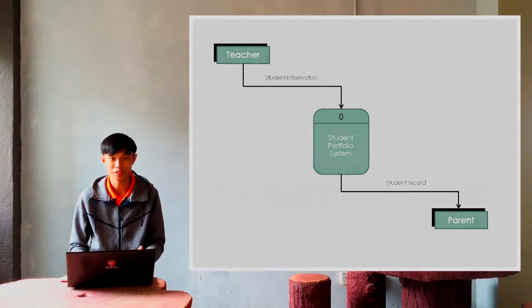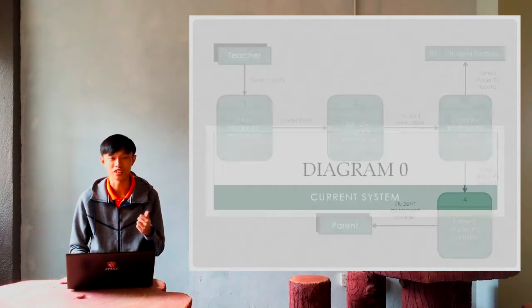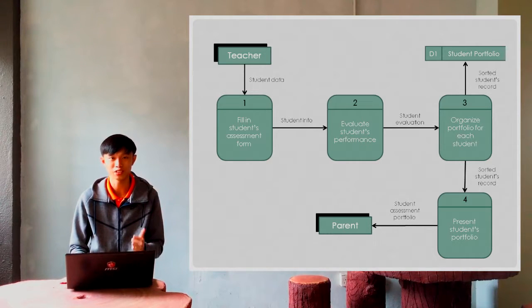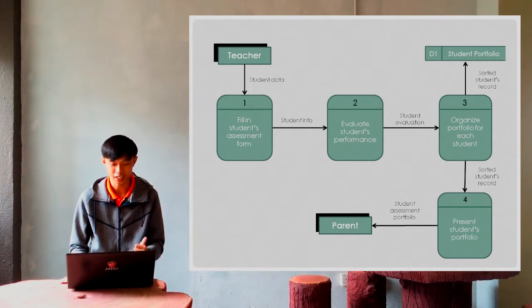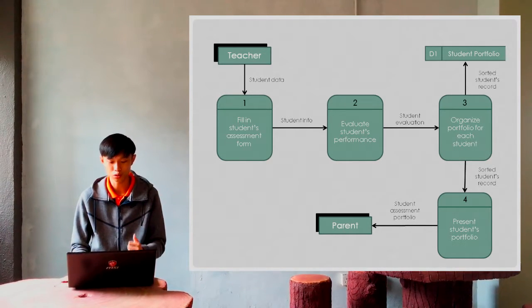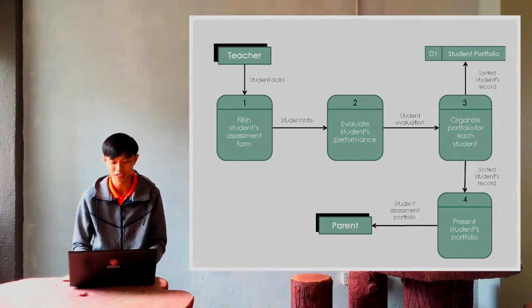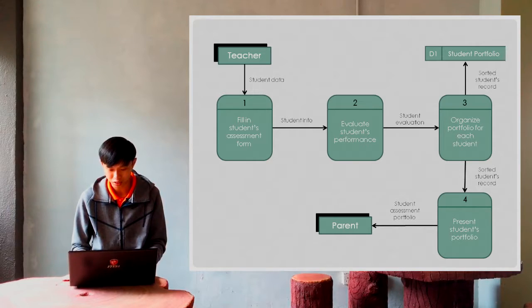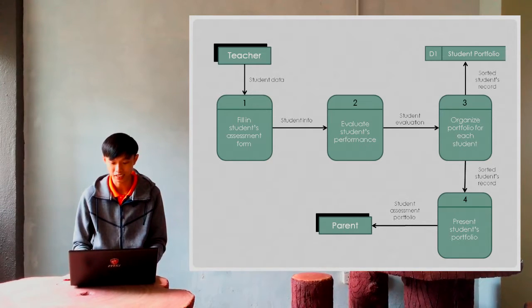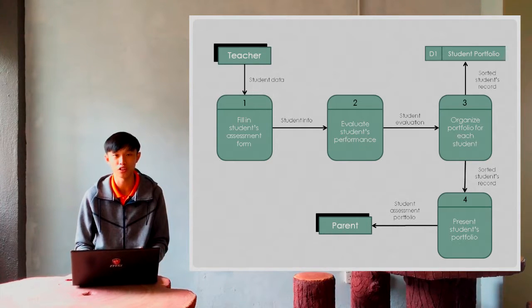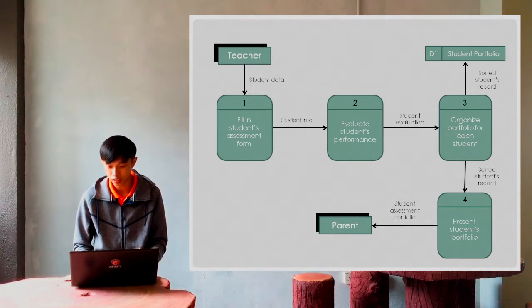For diagram zero in detail, the teacher has the student data which goes to the first process: fill in students' assessment form. Then the student information will go to the second process which is evaluate student performance, followed by student evaluation data into the third process which is organize portfolio for each student. From this, we have two outputs.